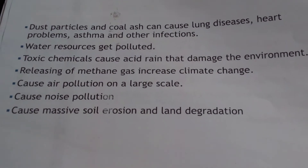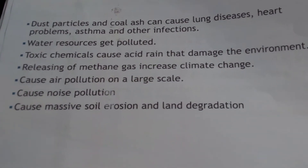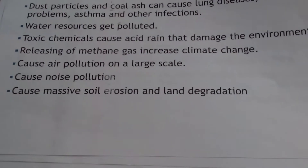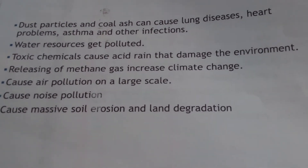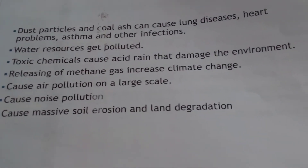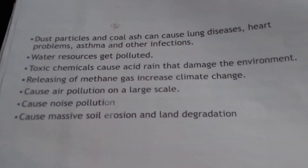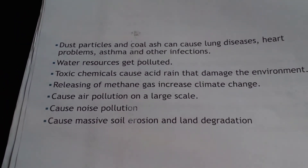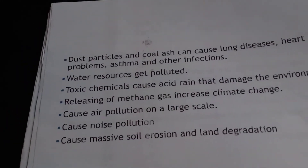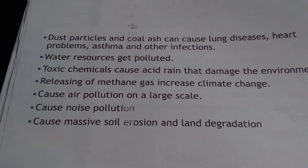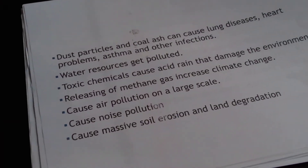Acid rain can corrode metals and buildings, and also destroys crop production and vegetation. Releasing of methane leads to climate change. Extraction and coal mining causes a lot of air pollution and noise pollution that affects people. It also causes erosion and land degradation, especially from open cast mining. Coal is an important resource for us, but it has so many impacts on our environment.